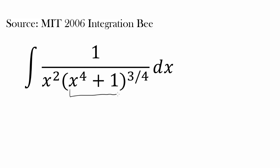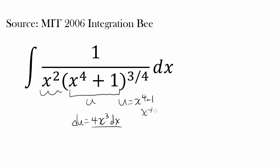We can think about letting u equal x to the fourth plus 1. But du is going to be 4x cubed dx, and that's very hard to relate to x squared. Because u is x to the fourth plus 1, so x to the fourth is u minus 1, and our x squared becomes plus or minus the square root of u minus 1 — and that's just crazy. I don't think we want to go that way.